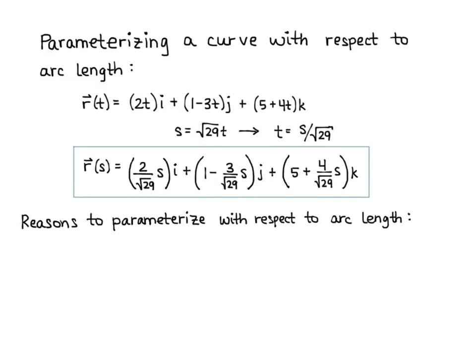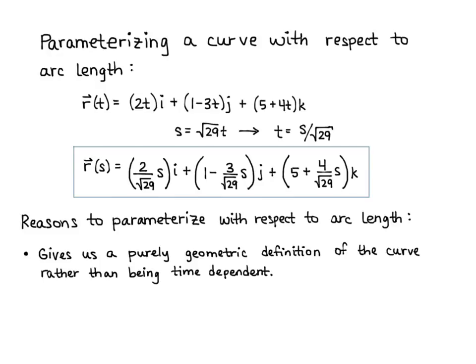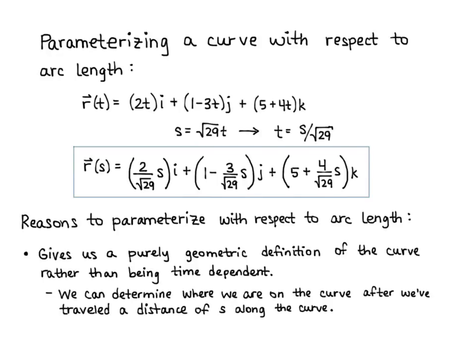Reasons to parametrize with respect to arc length: first, it gives us a purely geometric definition of the curve rather than being time dependent. With a t parametrization, you're asking where you are at a certain time. With arc length, you determine where you are after traveling a certain distance s along the curve — useful for studying geometry independent of velocity or time. Second, each curve has a unique arc length parametrization. Different parametrizations with respect to time can represent the same curve traveled at different paces, but the arc length parametrization is unique.